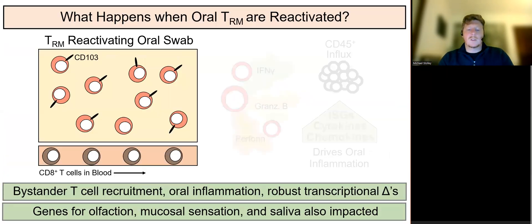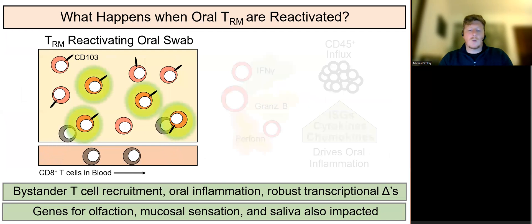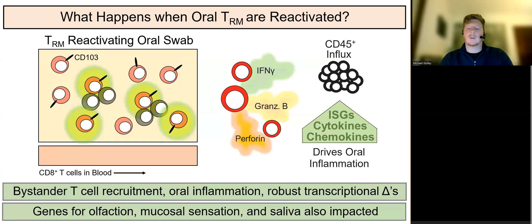With this approach, oral TRM were transiently reactivated by re-swabbing the oral mucosa surfaces of VPEP mice with cognate antigen dissolved in irritants. Reactivation elicited robust inflammation, including recruitment of circulating bystander memory T-cells into the oral mucosa and transcriptional induction of several antiviral, interferon-stimulated, and chemotactic genes.